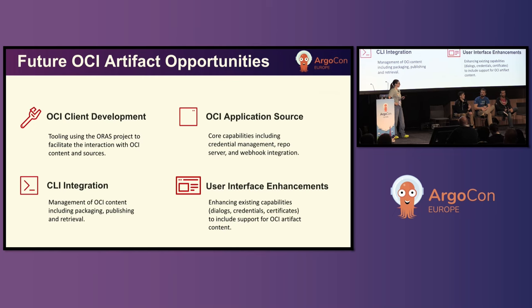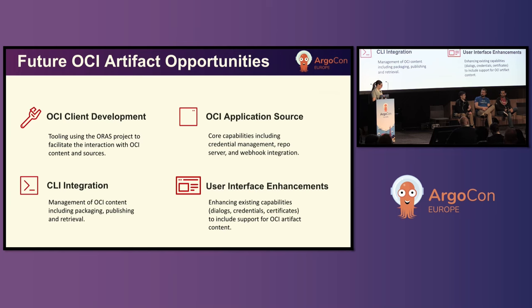In terms of OCI artifacts, I became a contributor to the Helm project to bring OCI to GA — it had been in experimental phase for about two years. I joined the community to help drive that to GA, which we did about two years ago. Since then, I also became a maintainer on the ORAS project — OCI Registries and Artifacts Storage — which is the underlying library used by Helm and many other CNCF projects.